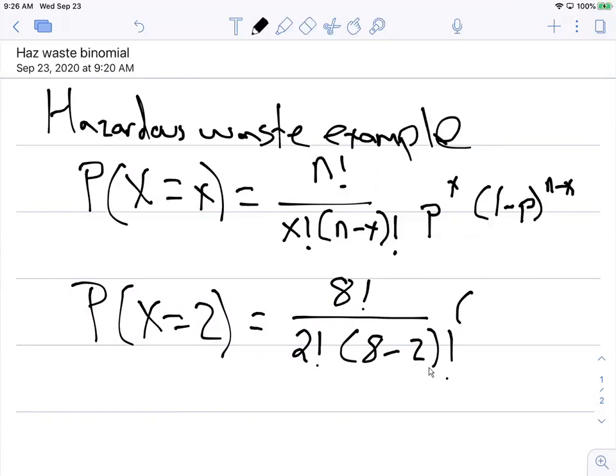The probability that each one might be issued a violation is 0.24. We square that value, and then one minus 0.24, and we raise that value to the n minus x, or eight minus two.